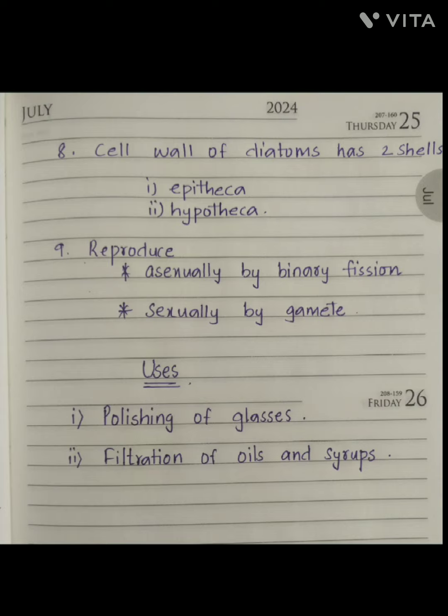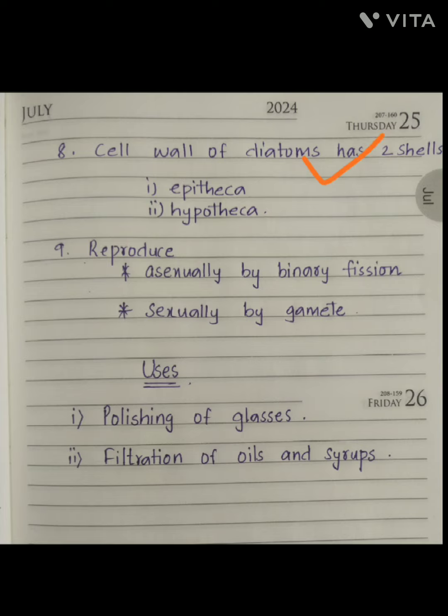The cell wall of diatoms has two shells. One is the epitheca and the other one is the hypotheca.